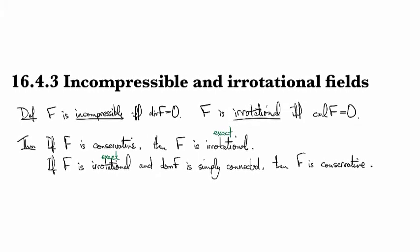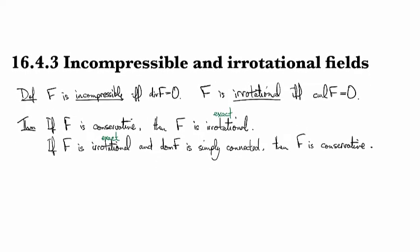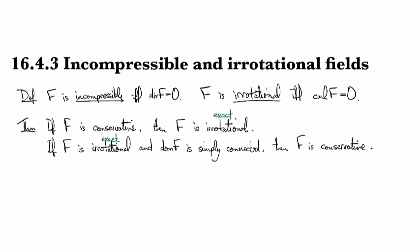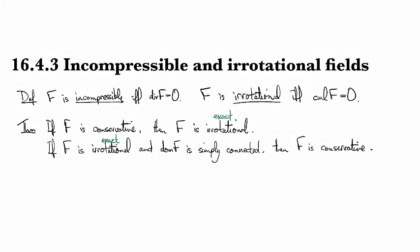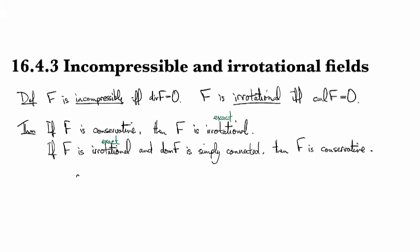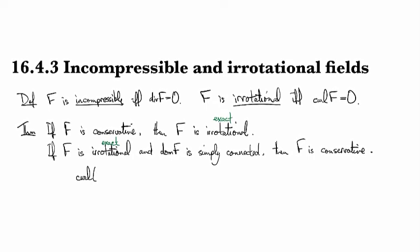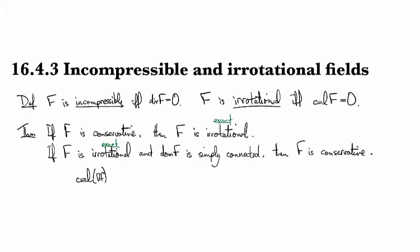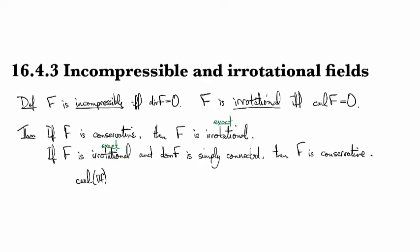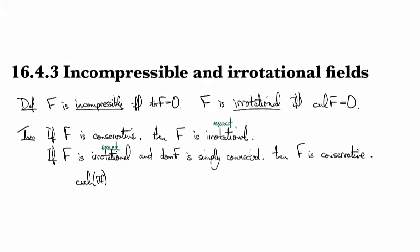It's just now understanding it in the context of curl. So the computation for why it works is that if we look at the curl of the gradient of something, if capital F is conservative then it looks like a gradient, right?